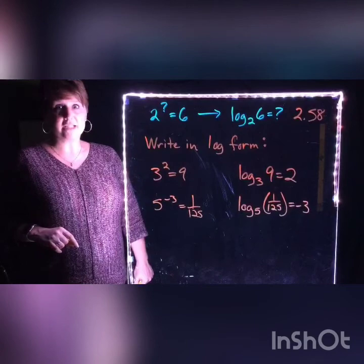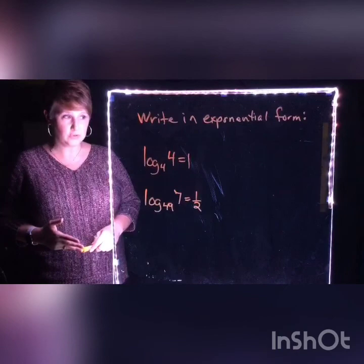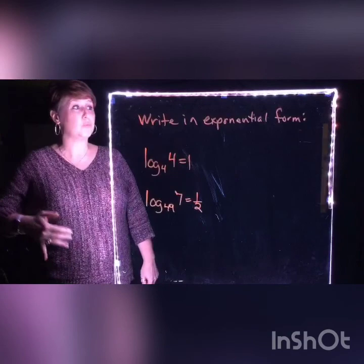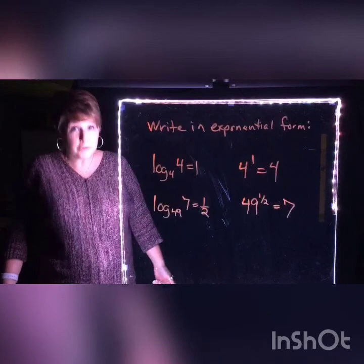Now we're going to try some where we switch them the other way. We currently have two things in logarithmic form: log base 4 of 4 equals 1, and log base 49 of 7 equals 1/2. I'd like you to take a moment and write those into exponential form. When you're done, the statements need to make sense — otherwise, you really did something wrong. Try this right now.